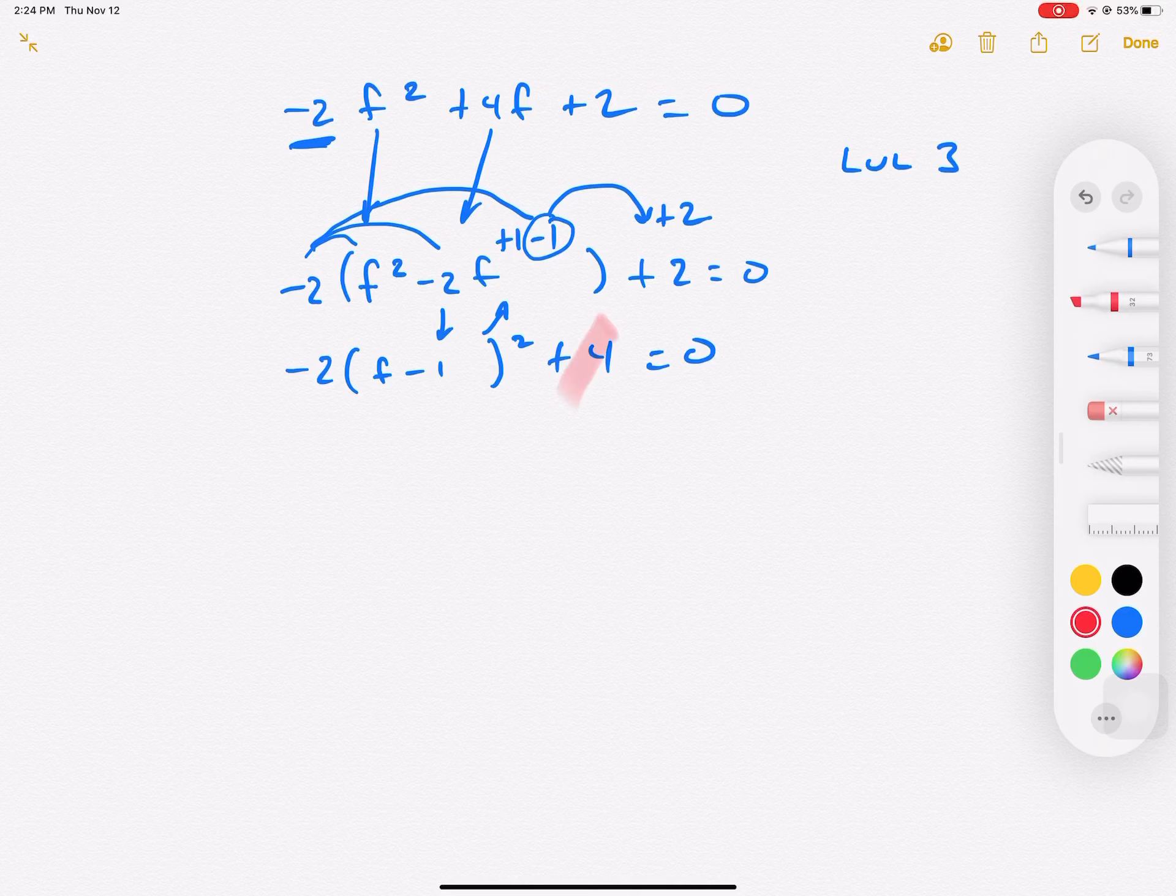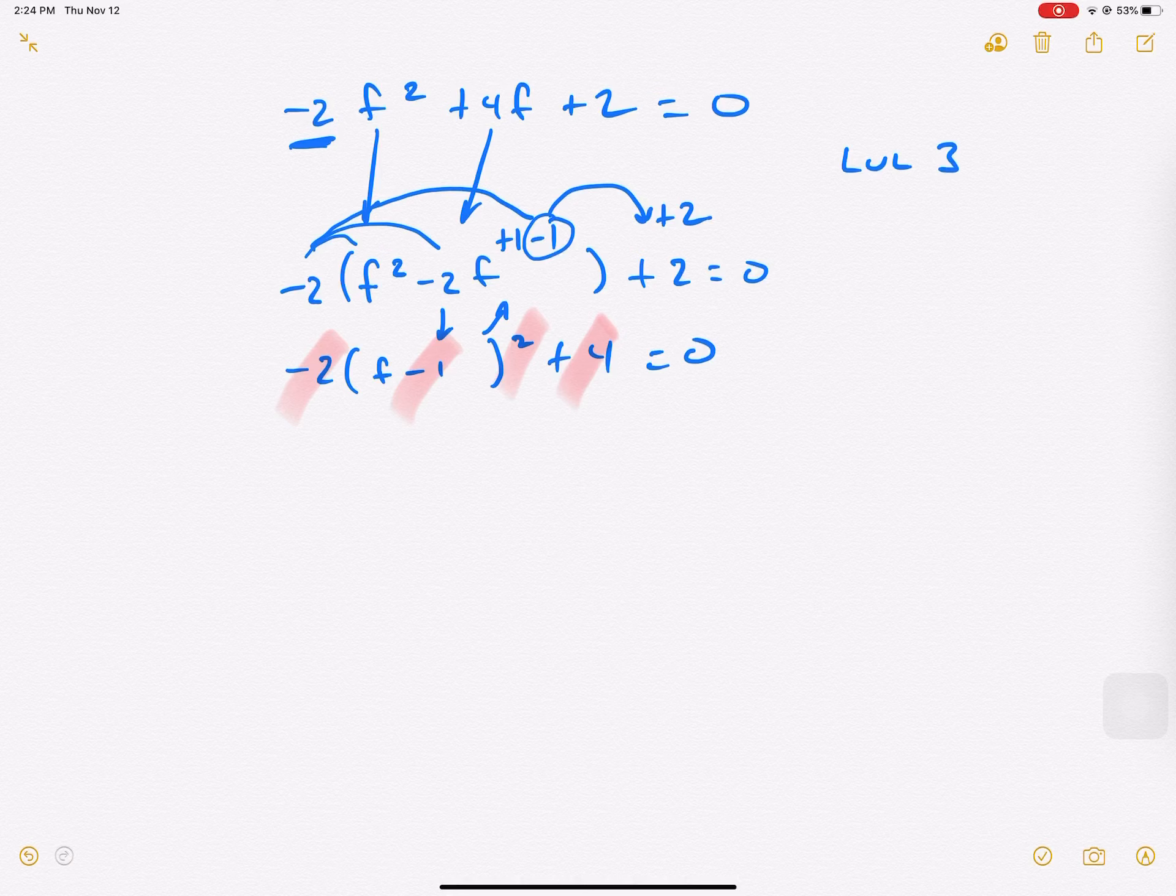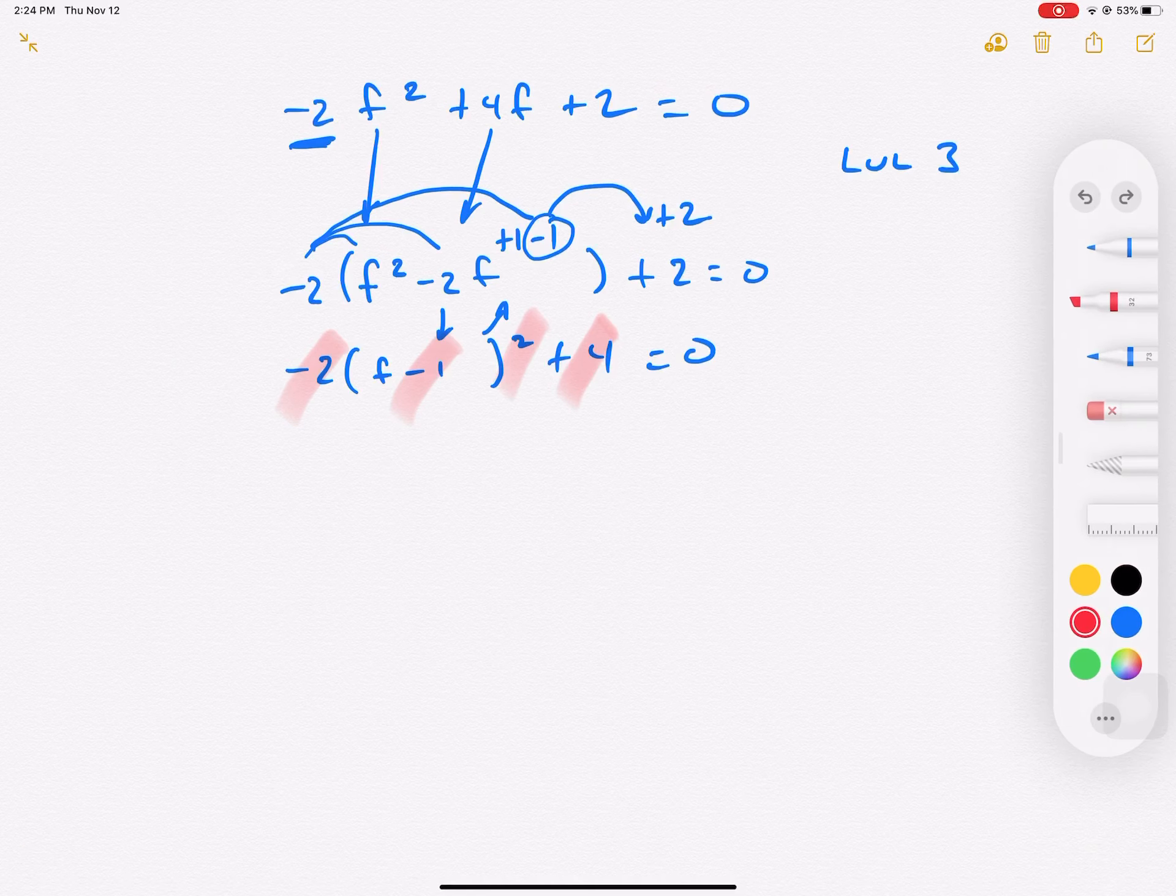We get rid of the 4, the 1, and the negative 2. And don't forget the squared. We're going to get rid of all this stuff. We do most of this in pretty much one step.